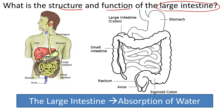The large intestine, also known as the colon, is the last part of the alimentary canal, besides the rectum. It can be broken down into three parts or sections. The first part connects to the small intestine. You could say that the large intestine is an extension of this pathway of digested material through the alimentary canal, but it has a very different structure than the small intestine.